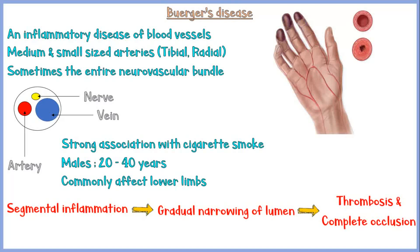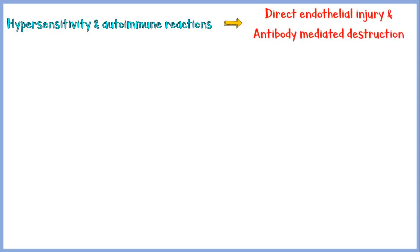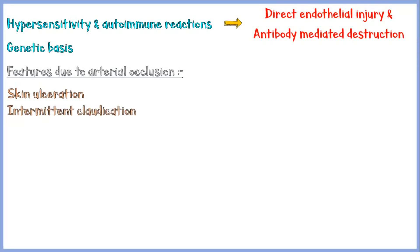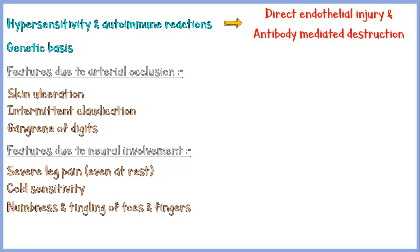Segmental inflammation of the vessels is thought to be due to hypersensitivity and autoimmune reactions, causing direct injury to the endothelium and antibody-mediated destruction of endothelial cells, with a genetic basis as well. Clinical manifestations include features of arterial obstruction — skin ulceration, intermittent claudication, and gangrene of digits — and neural involvement features such as severe leg pain at rest, cold sensitivity, and numbness and tingling of the toes and fingers.